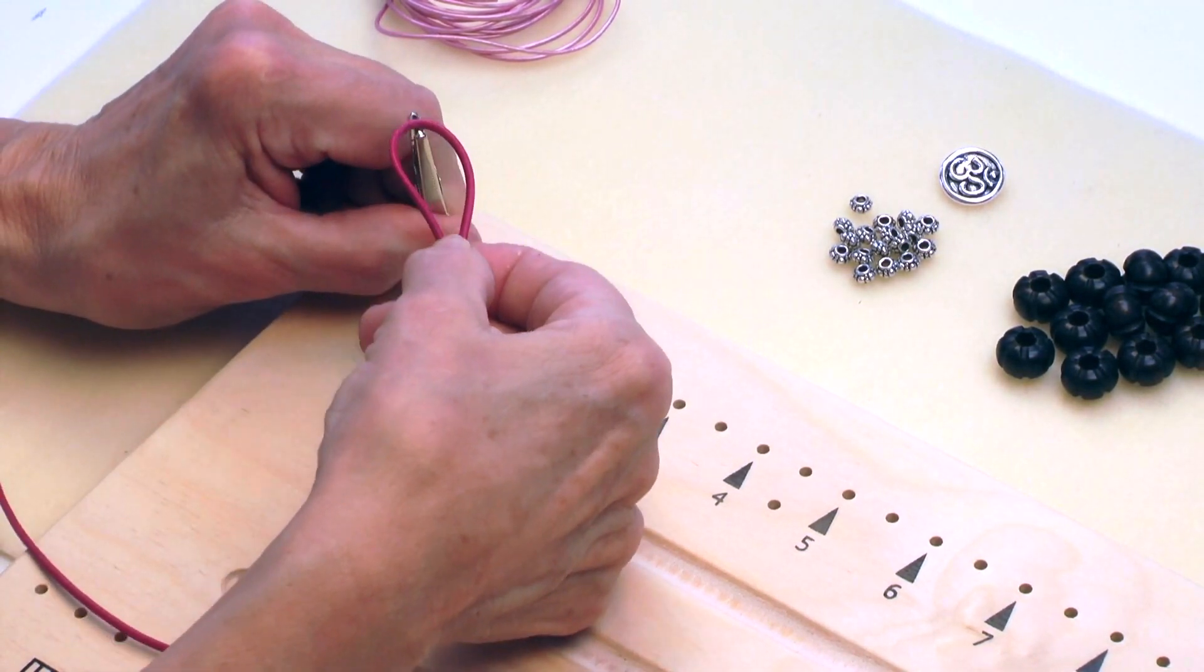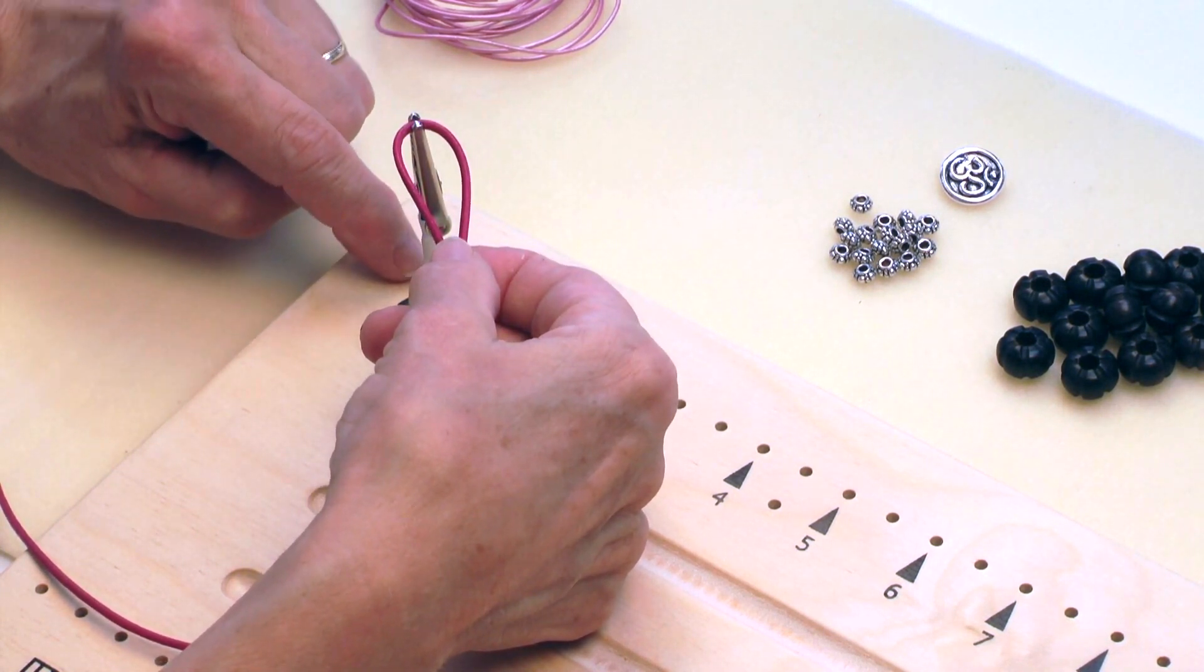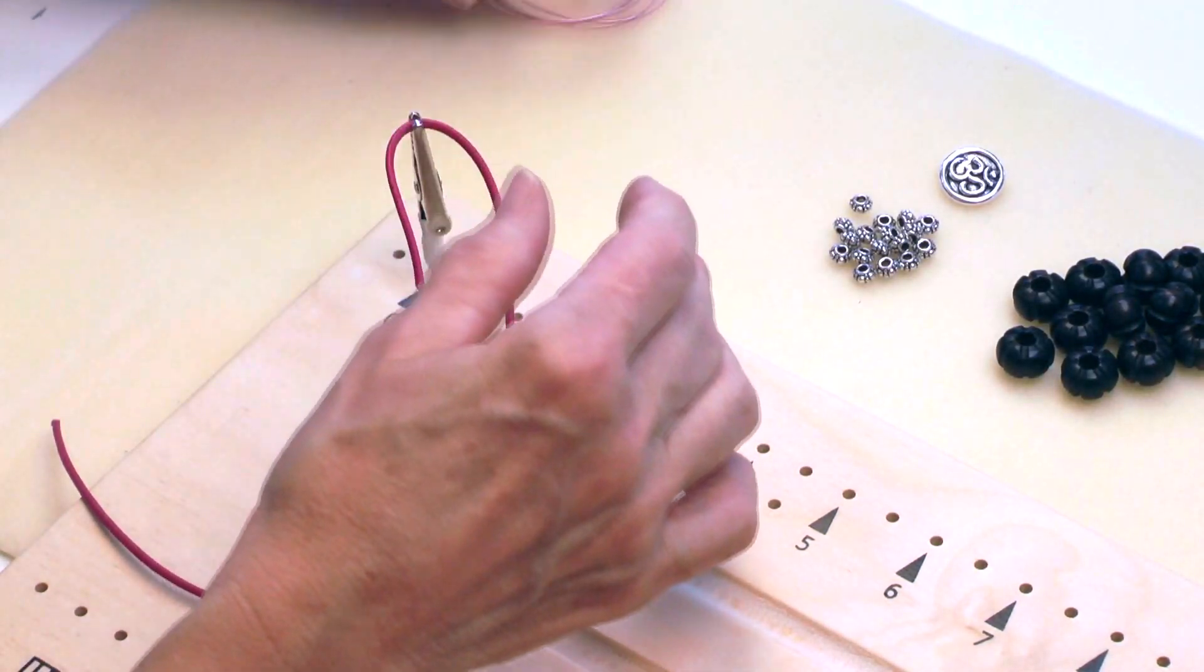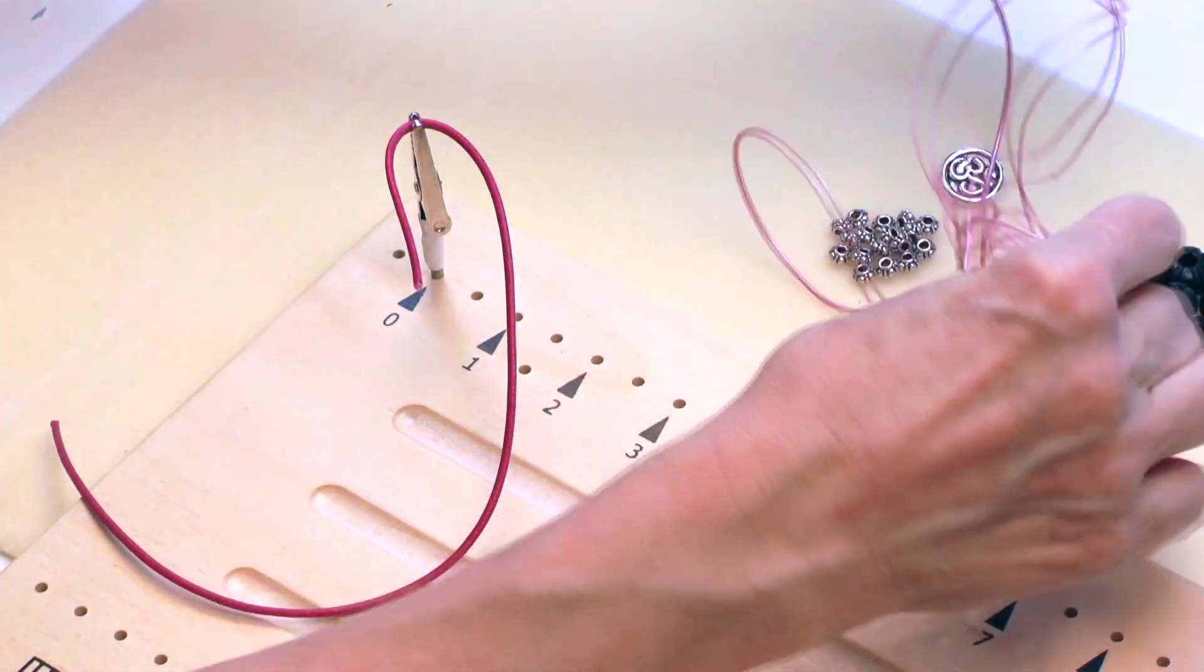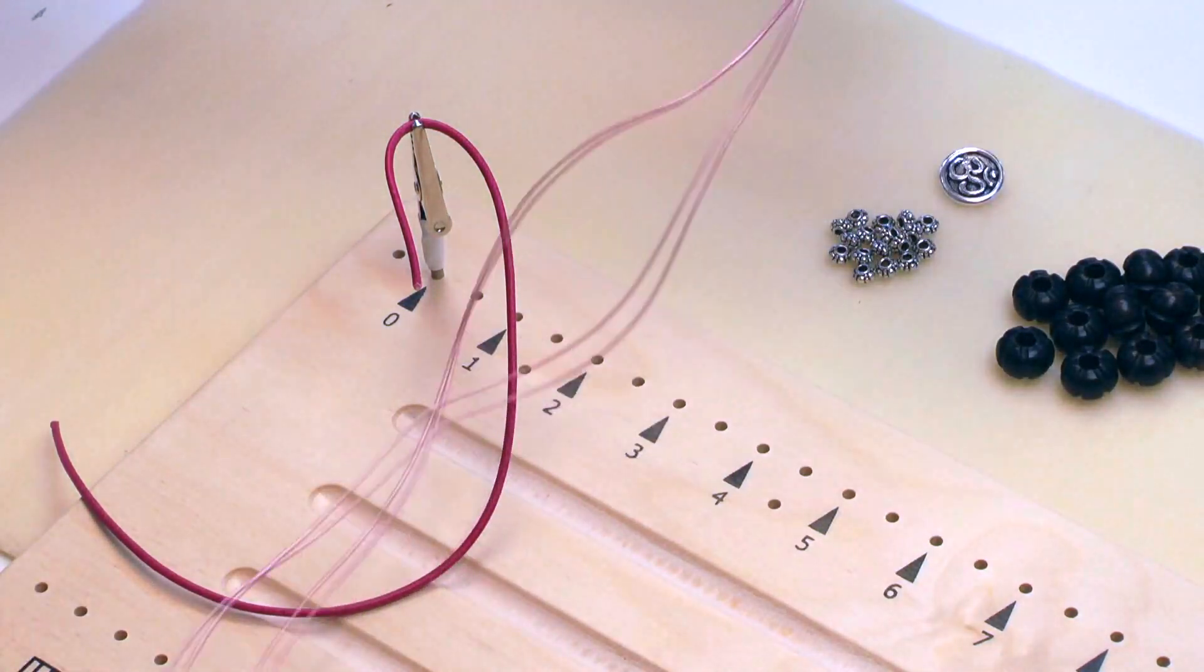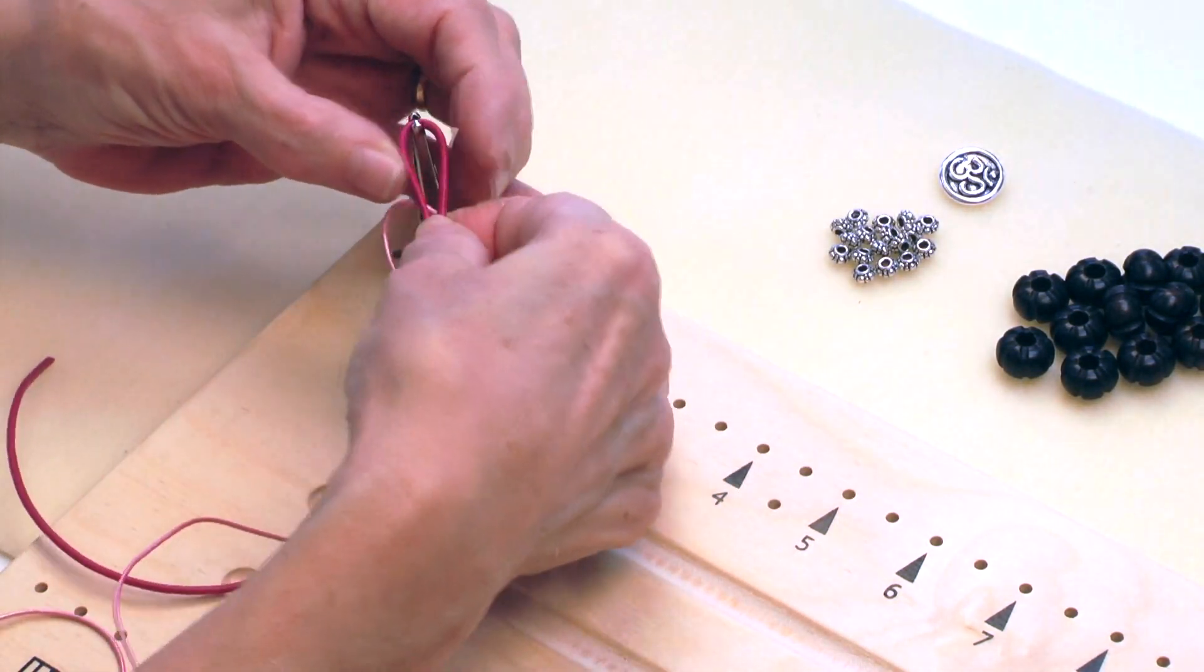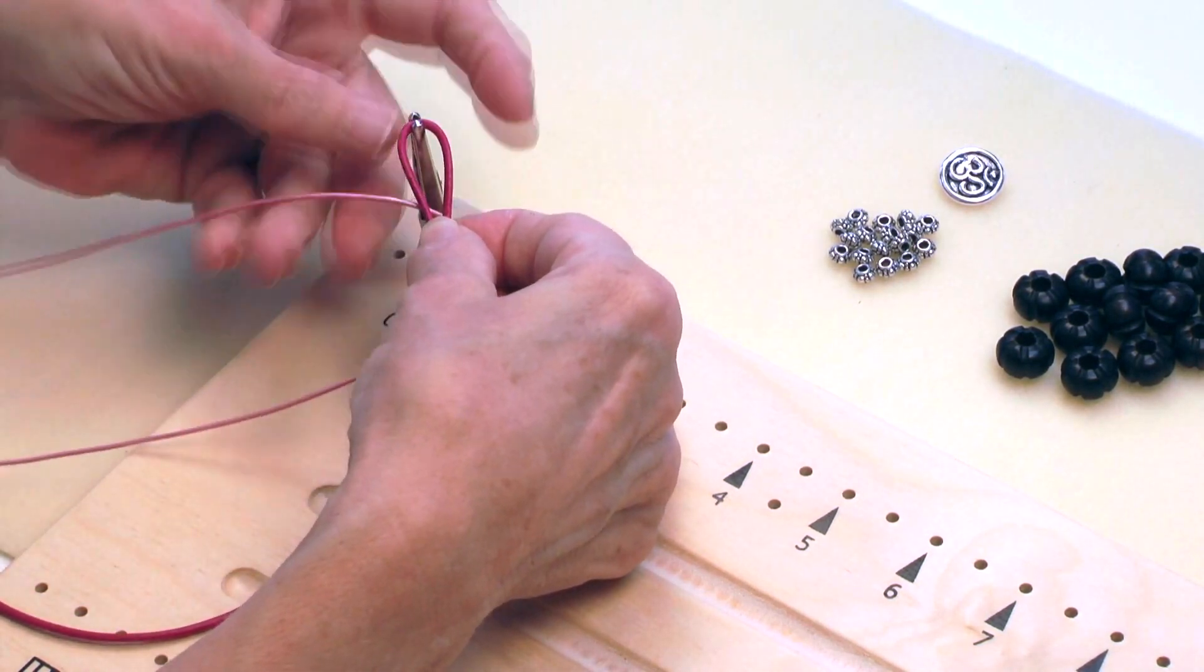I'm going to go ahead and clip it in this little clip and I put this clip at the zero point and then I'll be able to measure the length of my bracelet as I go along. Then I will take my longer cord and this is the one again that I'll actually use for knotting and I will find the center point. I'm going to lay it underneath my loop and start a knot.